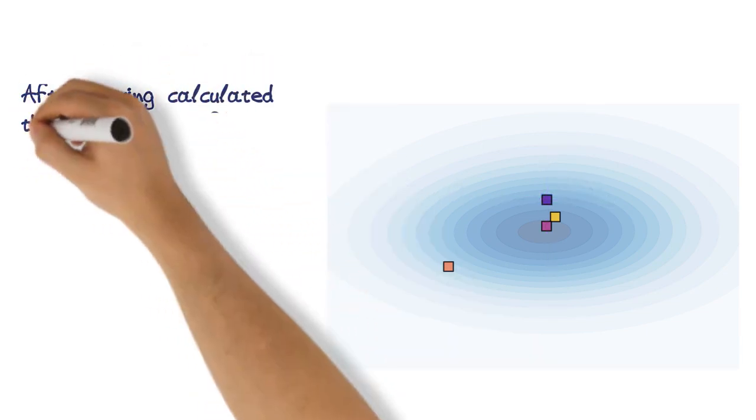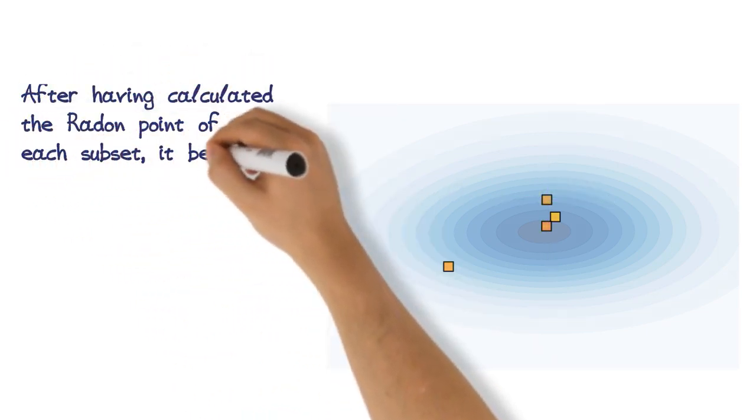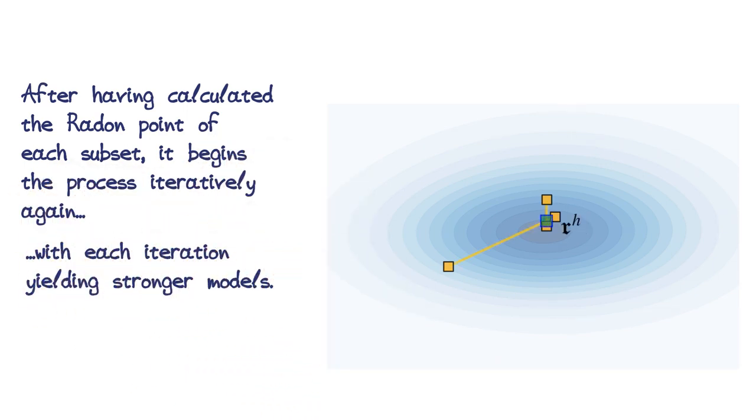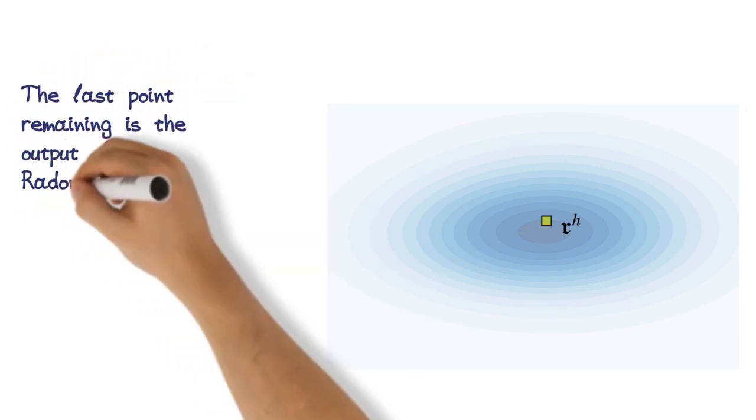After having calculated the Radon point of each subset, it begins the process iteratively again, with each iteration yielding stronger models. The last point remaining is the output of the Radon machine.